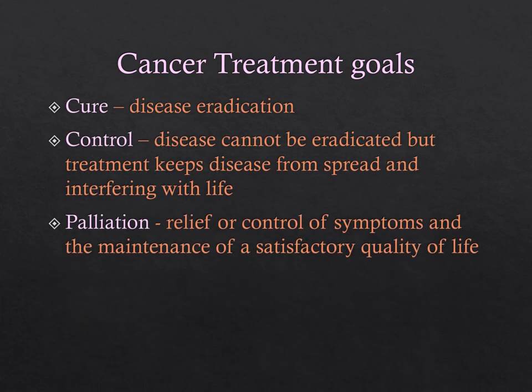Cancer treatment goals: when cure is the goal, treatment is expected to have the greatest chance of disease eradication and may involve local therapy like surgery or radiation alone or in combination with systemic therapies like chemotherapy or biologic and targeted therapies. Control is when the goal is to make sure the disease doesn't spread — it's not curable, but we try to maintain it where it is. With palliation, the goal is to relieve or control symptoms for quality of life rather than cure or control the disease.